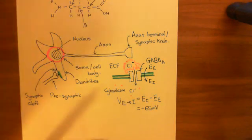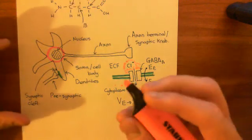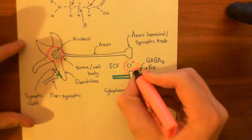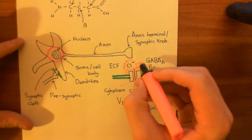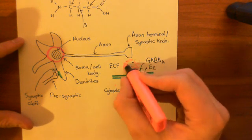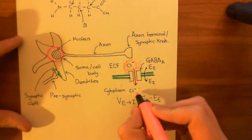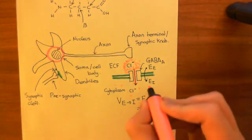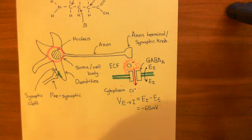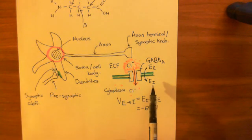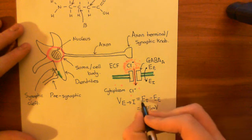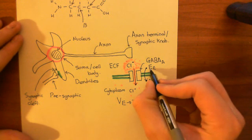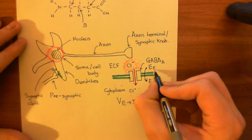What does that movement of chloride anions into the cell achieve? Basically, chloride has a negative charge, so you are moving negative charge from the extracellular fluid into the intracellular fluid. When you put negative charge into the intracellular fluid, that is going to reduce the electrical potential intracellularly — so this number is going to go down.